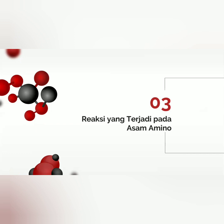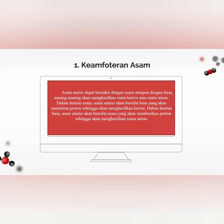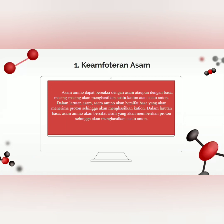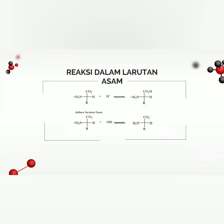Yang ketiga yaitu reaksi yang terjadi pada asam amino. Yang pertama yaitu keamfoteran asam. Asam amino dapat bereaksi dengan asam ataupun dengan basa, masing-masing akan menghasilkan suatu kation atau suatu anion. Dalam larutan asam, asam amino akan bersifat basa yang akan menerima proton sehingga akan menghasilkan kation. Dalam larutan basa, asam amino akan bersifat asam yang akan memberikan proton sehingga akan menghasilkan suatu anion.